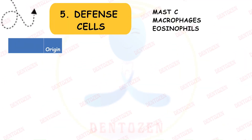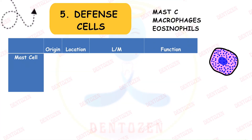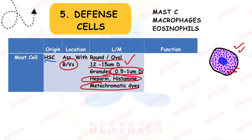Defense cells are of three types. Mast cells originate from hematopoietic stem cells and are located associated with blood vessels. On light microscopy they appear as round or oval cells, 12 to 15 microns in diameter, with many granules of 0.5 to 1 micron diameter containing heparin and histamine. They are stained by metachromatic dyes like toluidine blue and azure dyes.